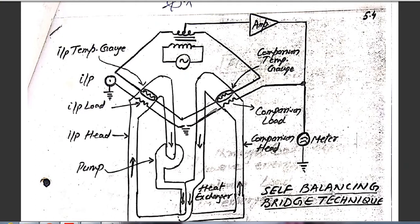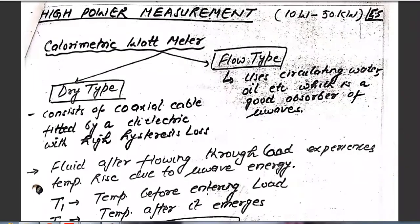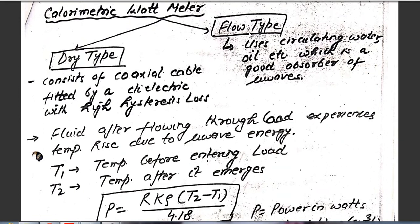Now let us discuss the third technique of power measurement — for high power measurements. The range is 10 W to 50 kW. This calorimetric wattmeter method can be further subdivided into two types: dry type technique or flow type technique. In the dry type technique, it consists of a coaxial cable fitted with a dielectric having high hysteresis loss. In the flow type calorimetric wattmeter method, it uses circulating water or oil, which is a good absorber of microwave energy.